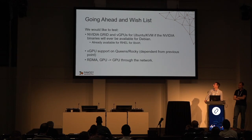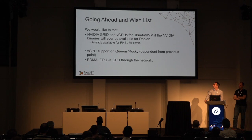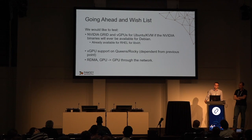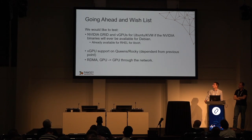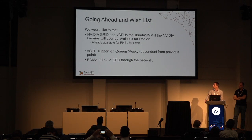On our wish list, we'd really like to test NVIDIA Grid and vGPUs for Ubuntu. The packages and binaries are already available for Red Hat and libvirt but not yet for Ubuntu. I asked the Ubuntu team if there was any news — they said the kernel supports vGPUs from 4.10 or 4.12, but without binaries it's unclear if this will be possible. Once that's done, we'd like to try vGPU support on Queens and Rocky, and after that, test RDMA for GPU-to-GPU communication over the network.